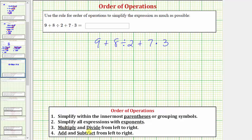So looking at step three we multiply and divide from left to right and then step four we add and subtract from left to right.